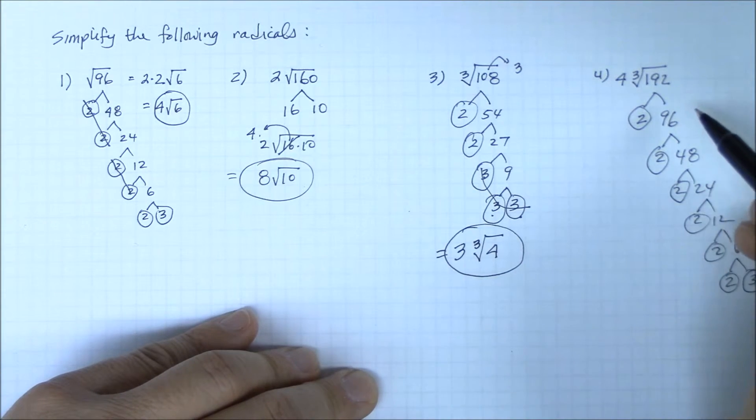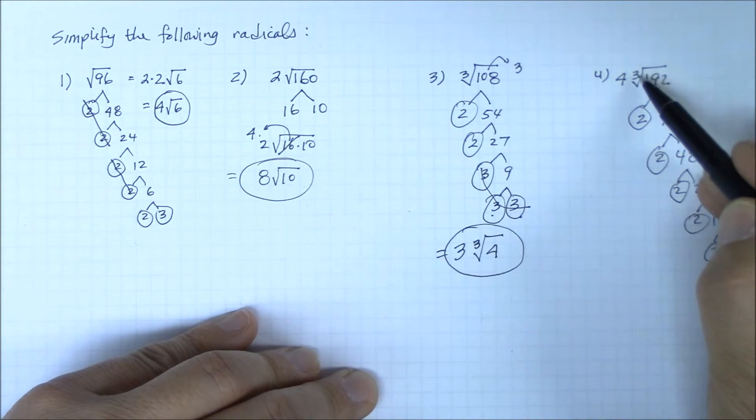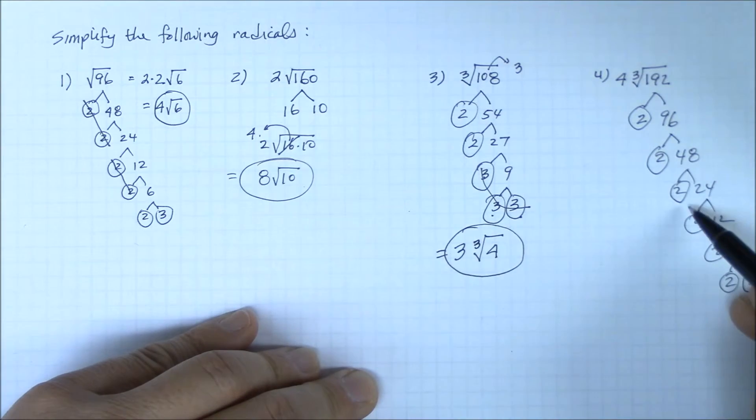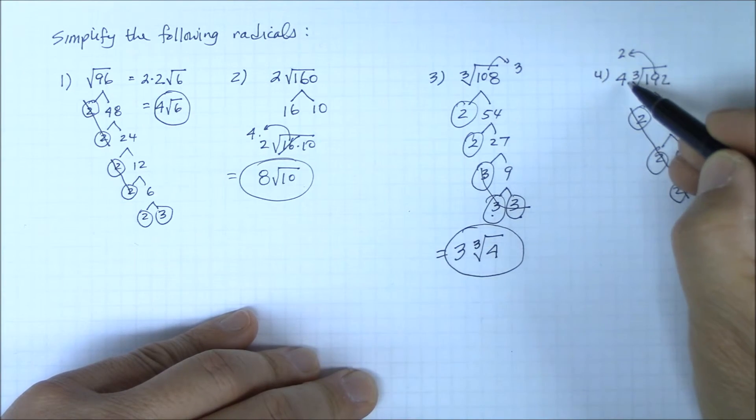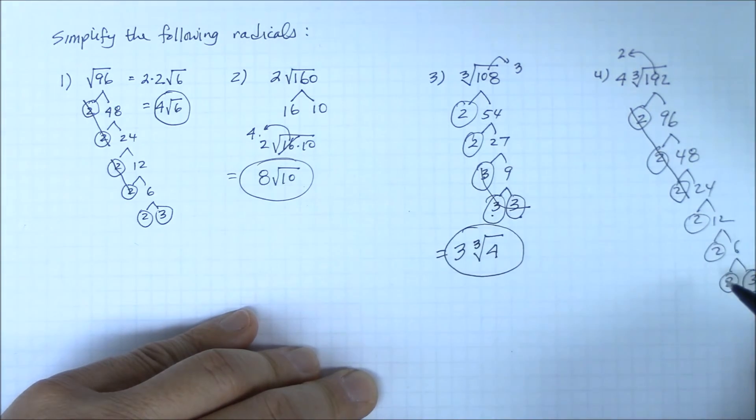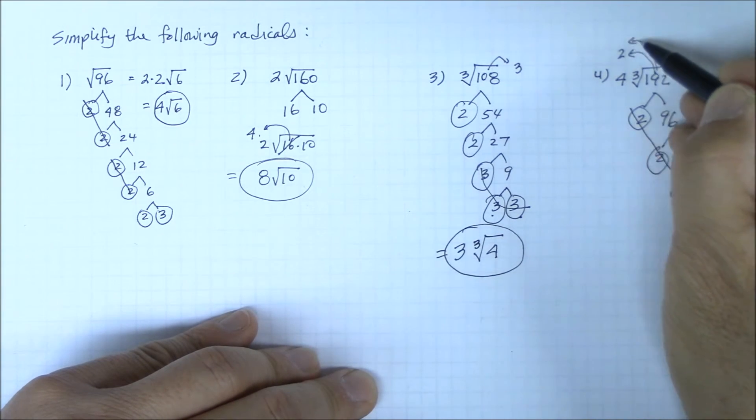Now to simplify this, I need three identical numbers. Well, here I have three 2s. They come out as a 2, which will multiply with the coefficient 4. And I see another set of three 2s, so they also come out and multiply to it.